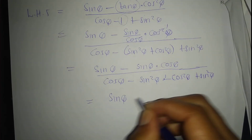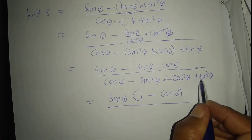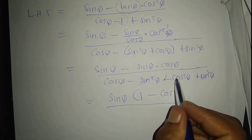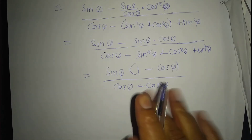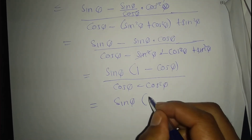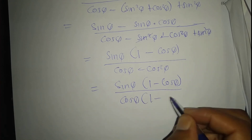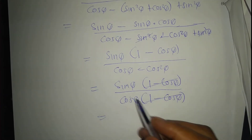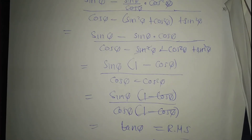The common factor of sin theta goes outside: one minus cos theta. This cancels with the denominator, leaving sin over cos, and sin over cos is the same as tan theta — which is the same as the right hand side. Identity proved. Thanks for watching. If you enjoyed, leave a thumbs up and consider subscribing. Links for all other videos for this question paper are in the description below.